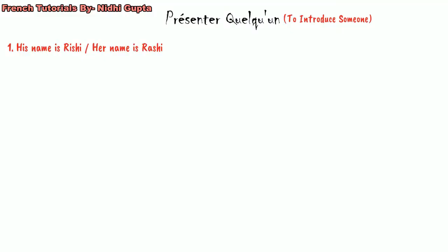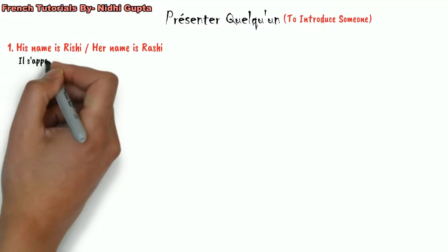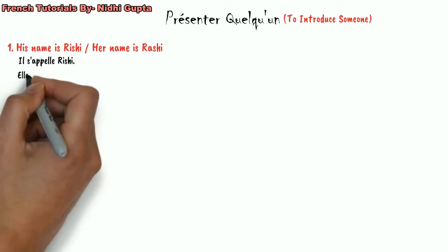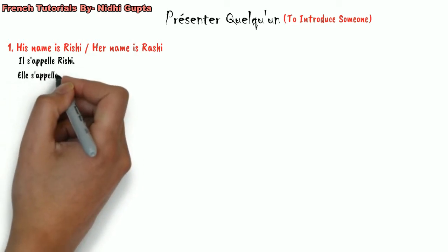In French, for a male we say 'il s'appelle Rishi,' and if this is a girl we say 'elle s'appelle Rishi.' So this is how we say someone's name in French.